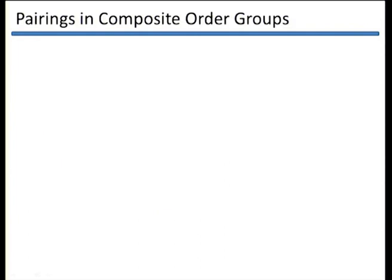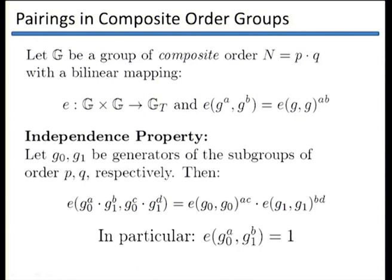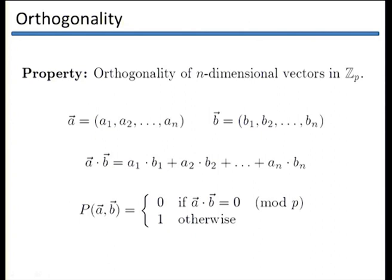Our scheme works in bilinear groups of composite order, where the order is a product of two primes, giving two subgroups G0 and G1. An independence property is satisfied: pairing an element of the first subgroup with one of the second gives 1. The property our construction preserves is orthogonality of n-dimensional vectors — the messages — outputting 0 if and only if their inner product is 0.